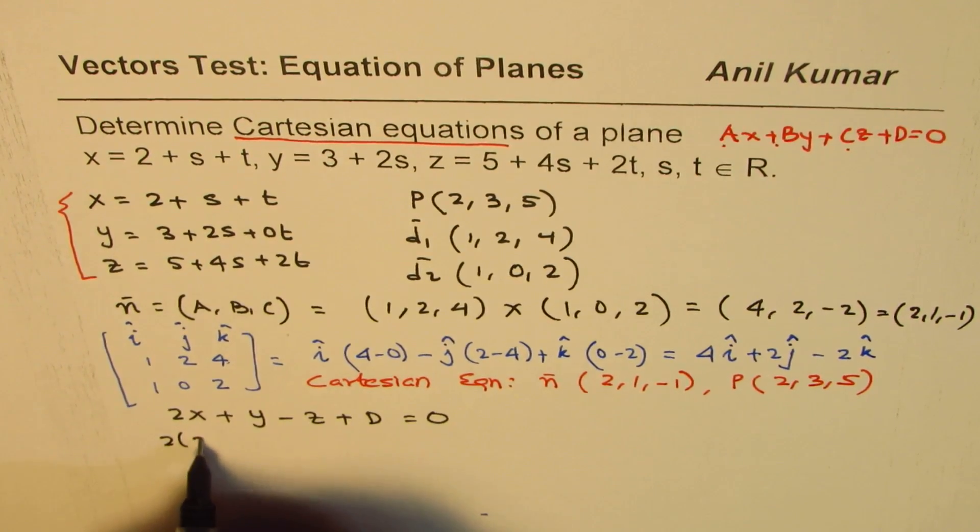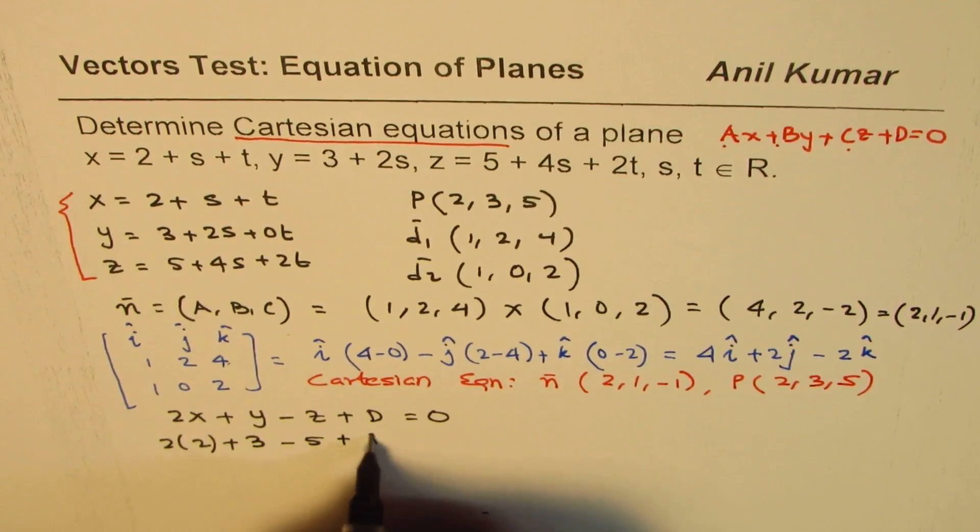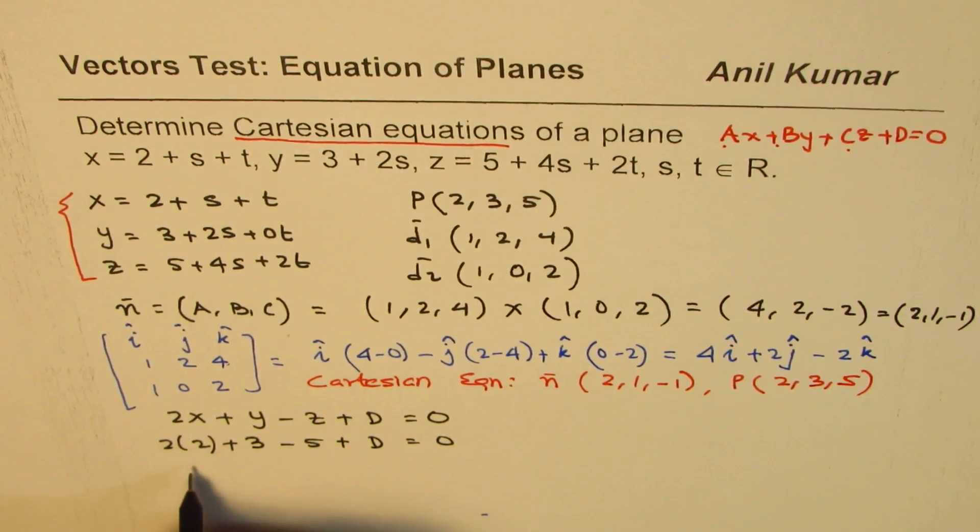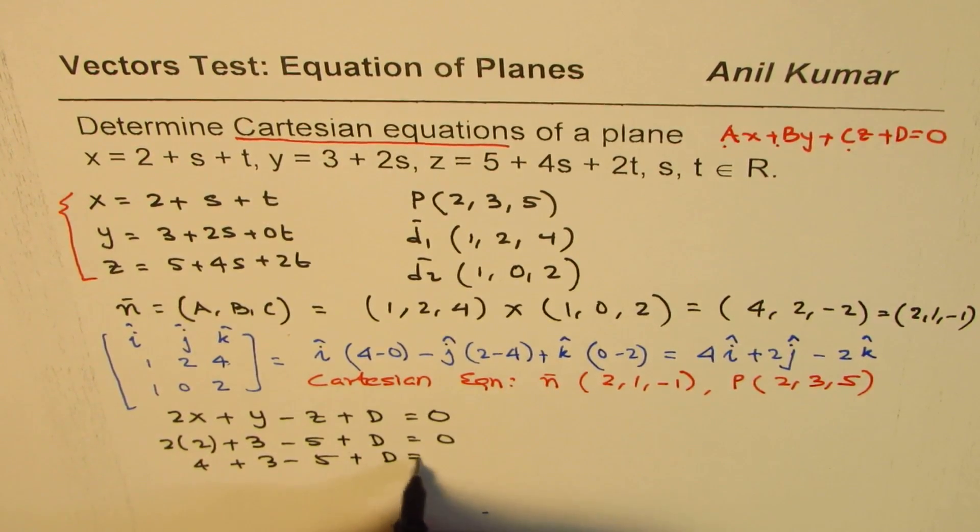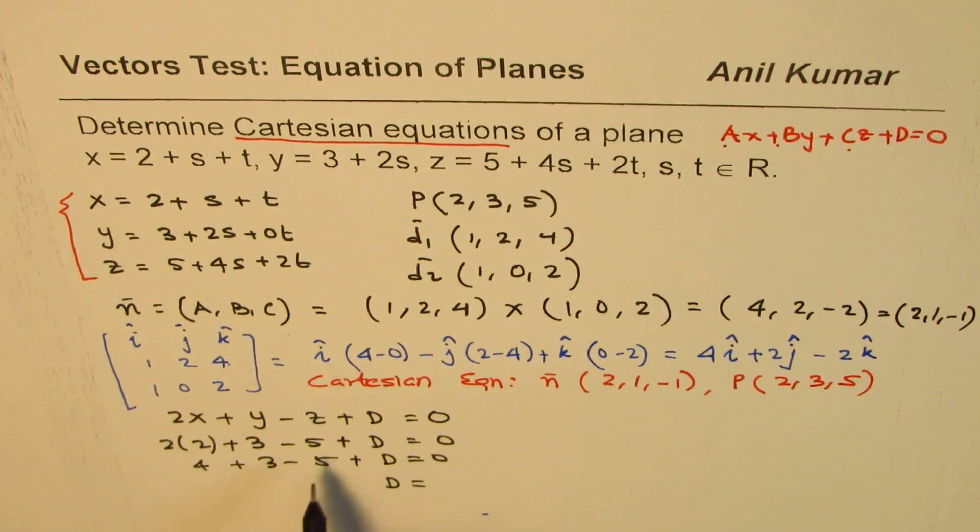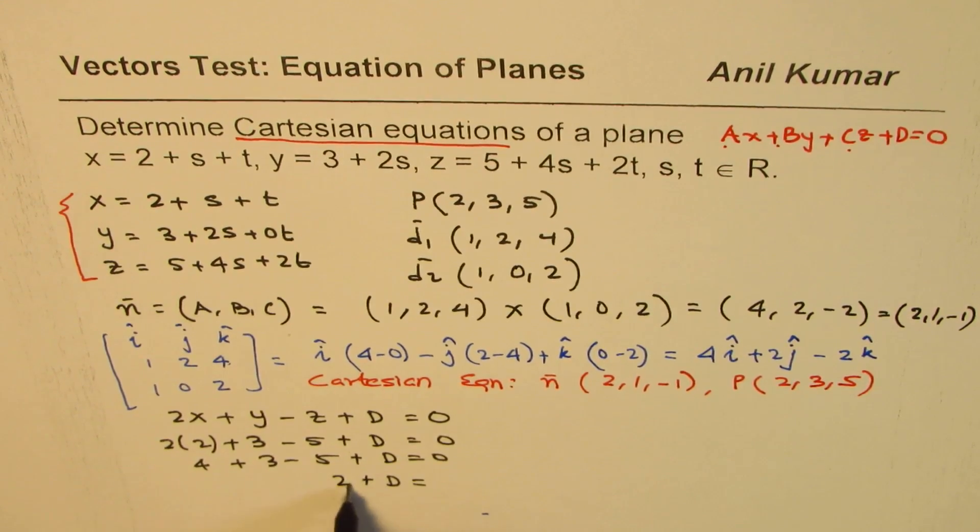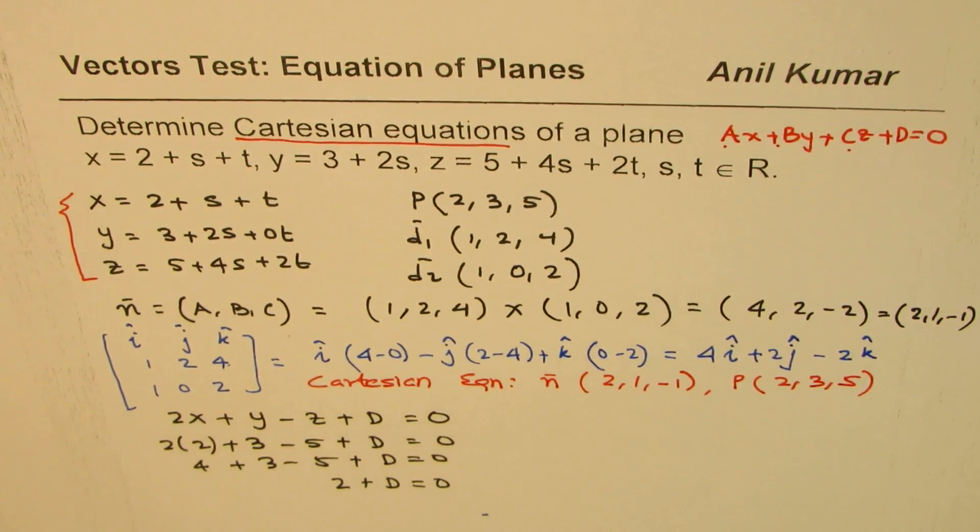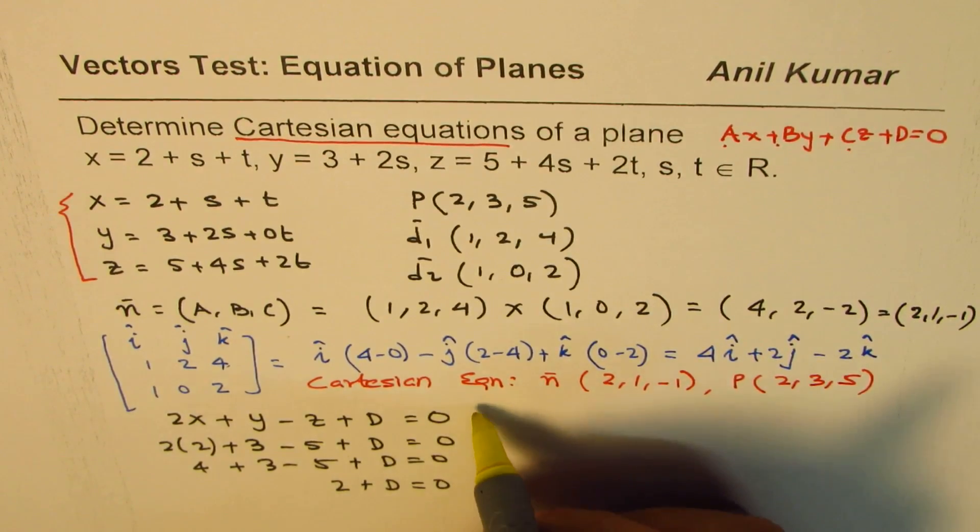When I substitute the point, I get 2(2) + 3 - 5 + D = 0, which is 4 + 3 - 5 + D = 0, so 2 + D = 0. From here you get D = -2.